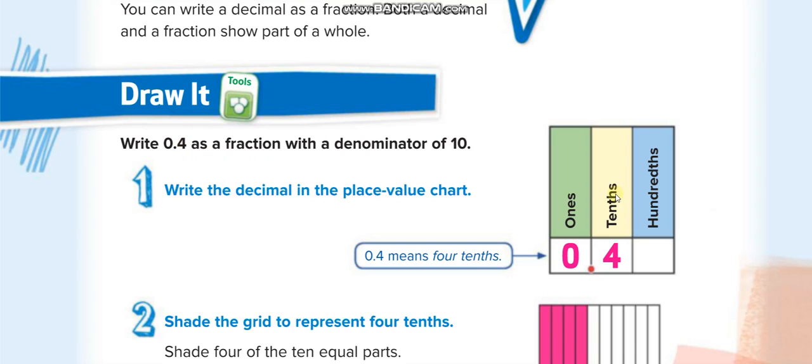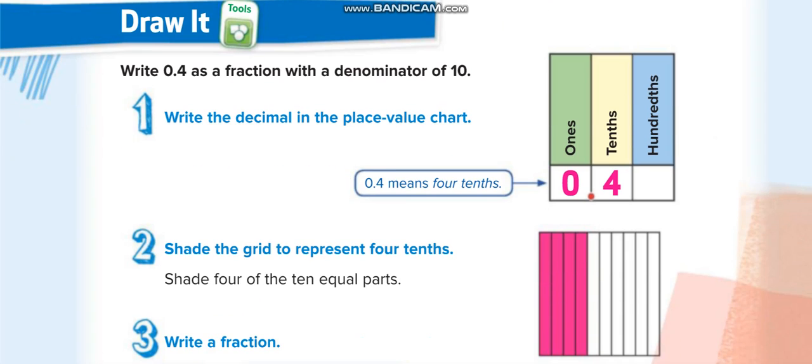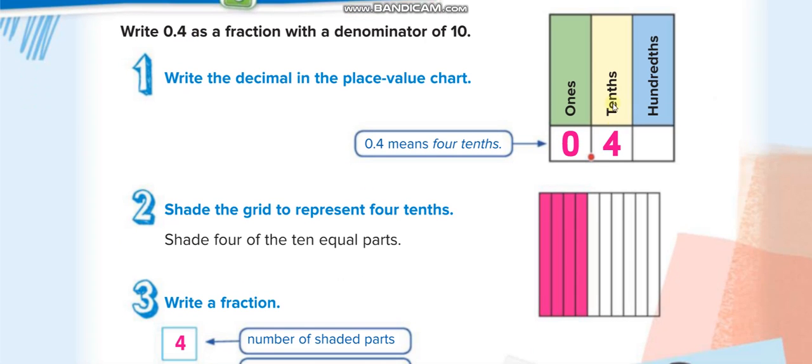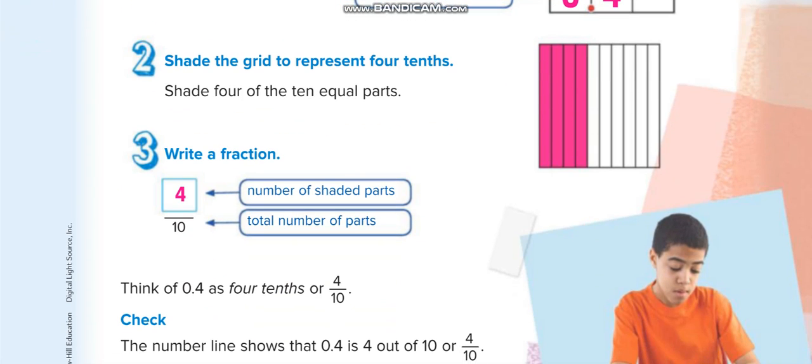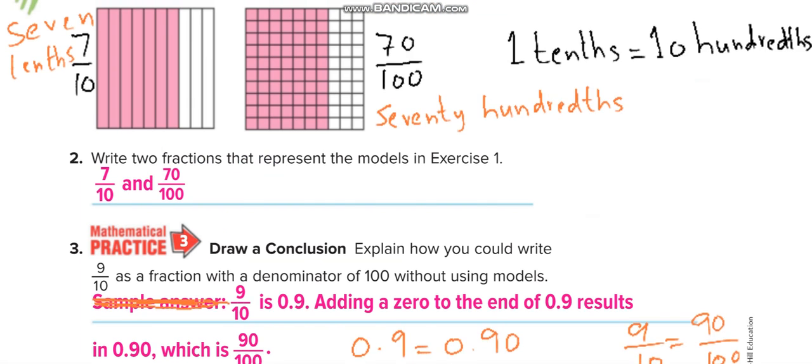If it is 0.04, the 4 is at the hundredths place, then it will be 4 over 100 according to the place values of the last digit. The denominator, so 0.4, will be 4 over 10. Similarly here, see this one, now 0.45.